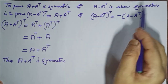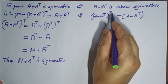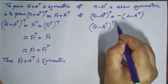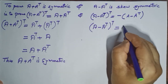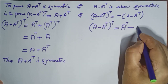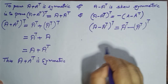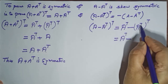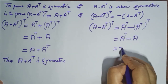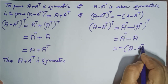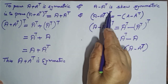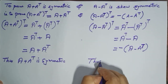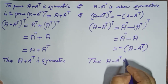Now we have to prove A minus A-transpose is skew-symmetric — that is, A minus A-transpose whole transpose equals negative of A minus A-transpose. Starting from A minus A-transpose whole transpose, using the property, it equals A-transpose minus A-transpose whole transpose, which equals A-transpose minus A, which can be written as negative of A minus A-transpose. Thus A minus A-transpose is skew-symmetric.